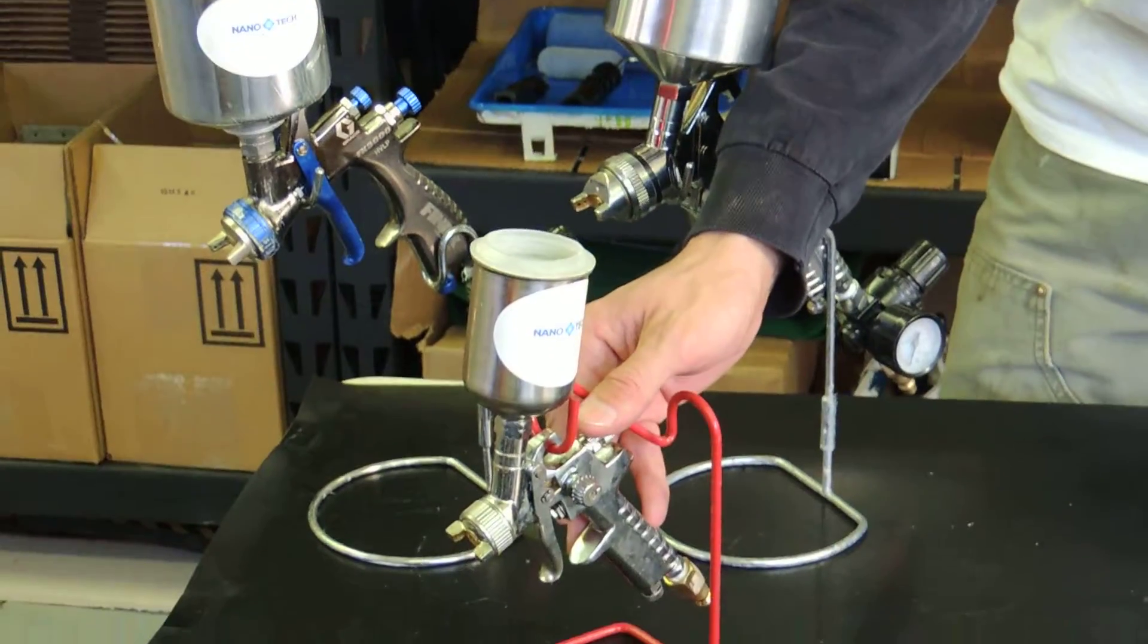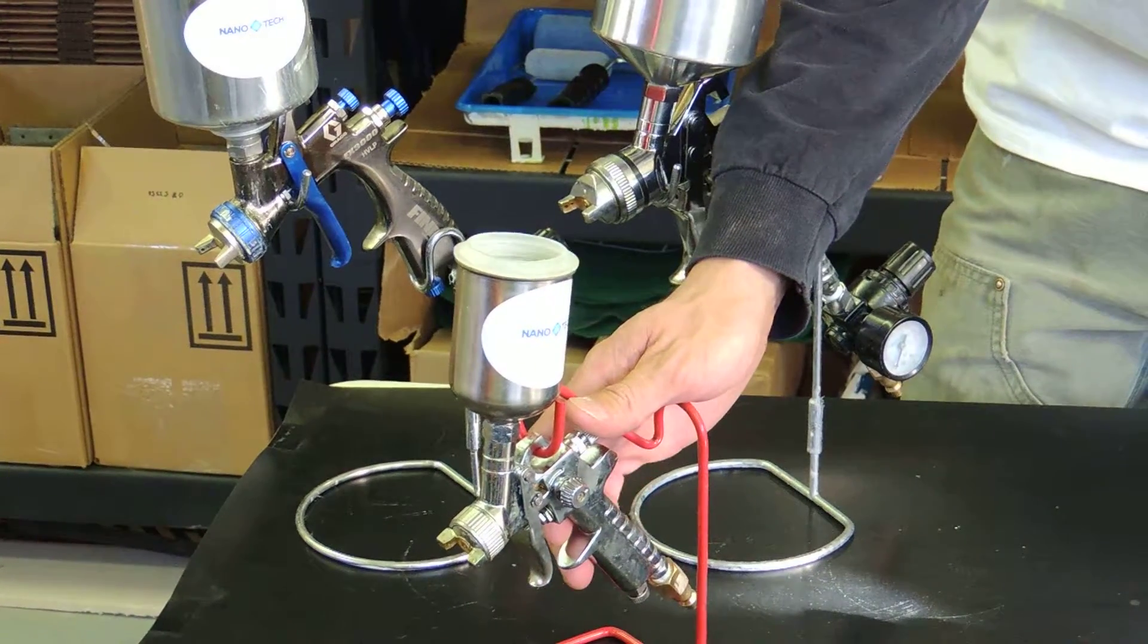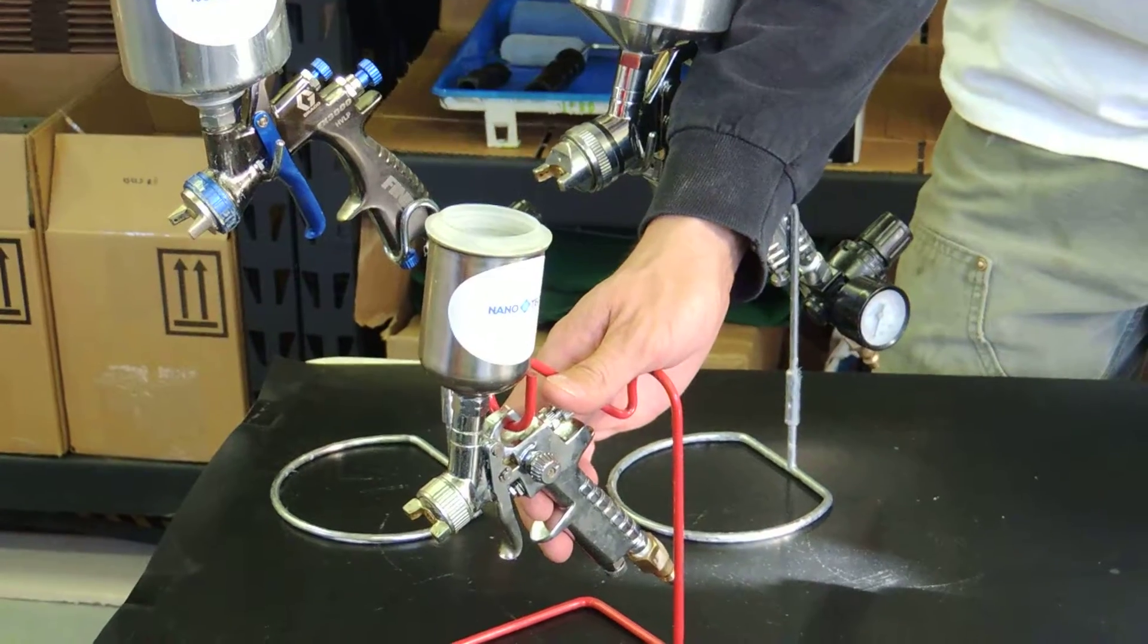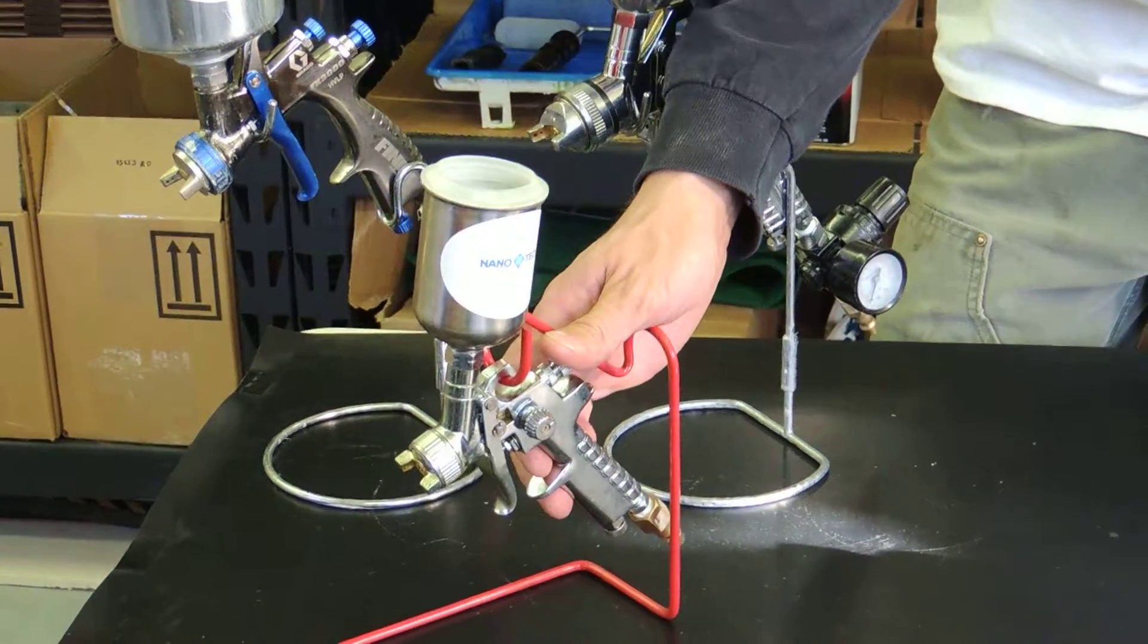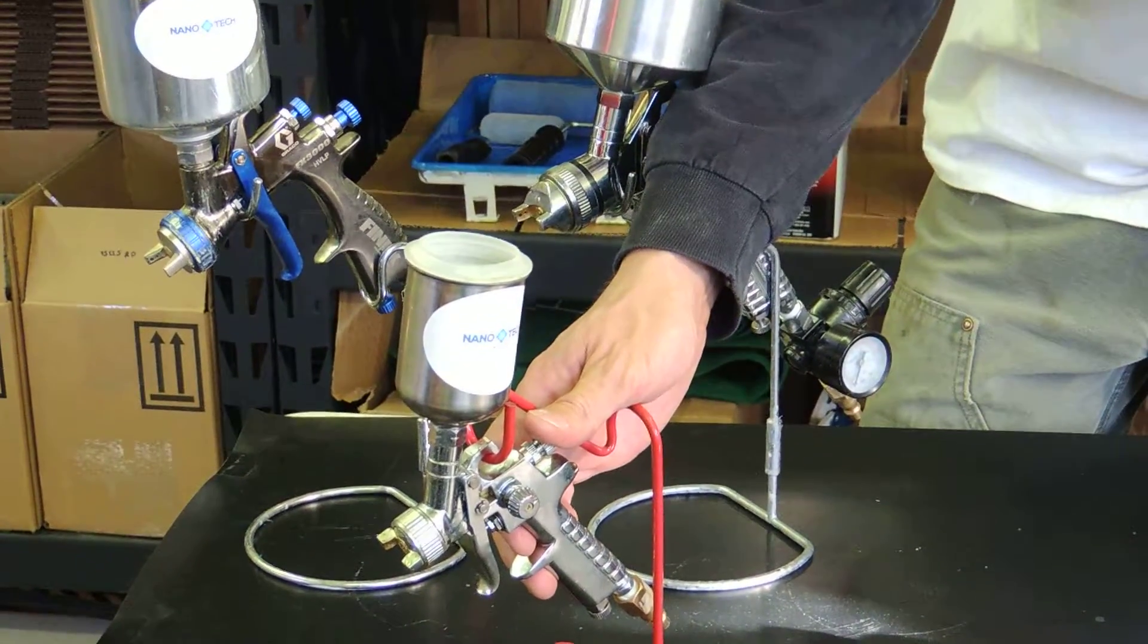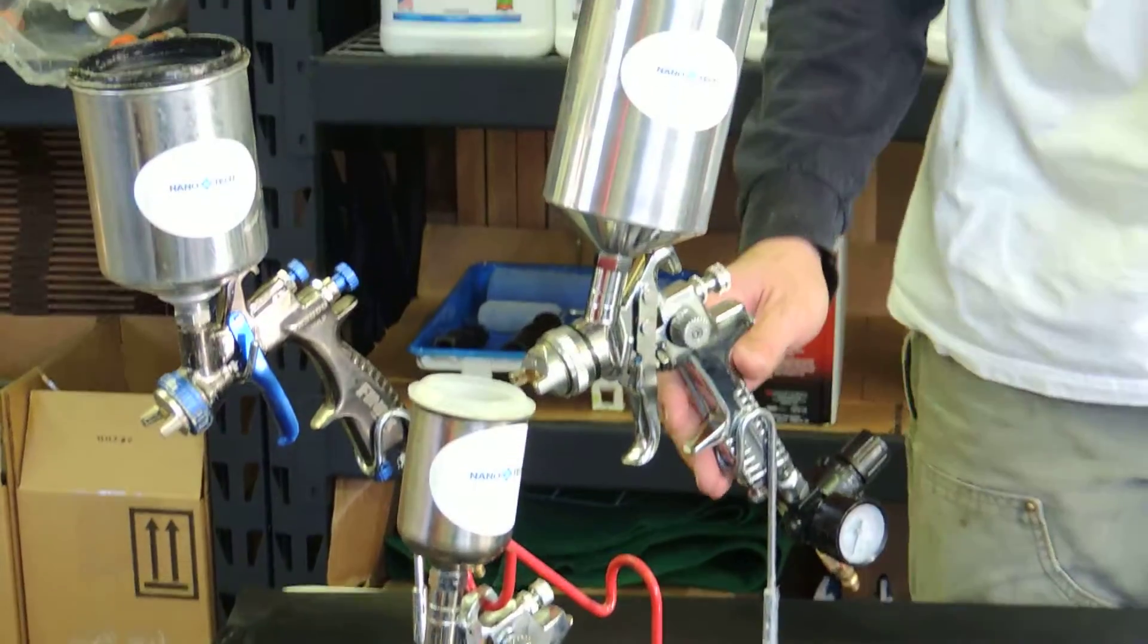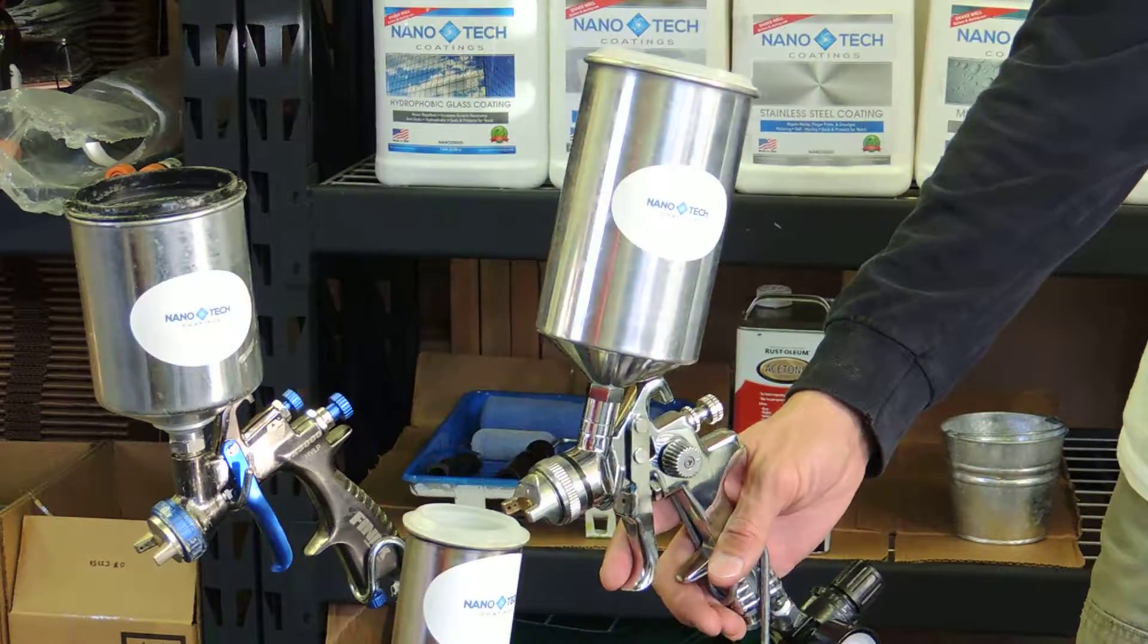This smaller one is more of a detail gun that you can use for smaller applications if you want to keep your spray contained to smaller areas. These larger guns are the more general-purpose guns that we use on a regular basis for everyday applications.